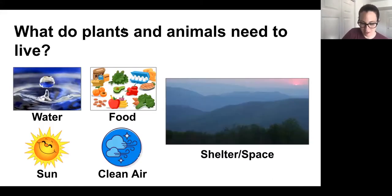So on this next slide we have some pictures of all of those things. Plants and animals need water and food and sunlight and clean air in order to survive, and so they need habitats like shelter or space that's going to give them that.